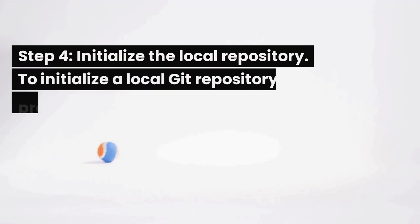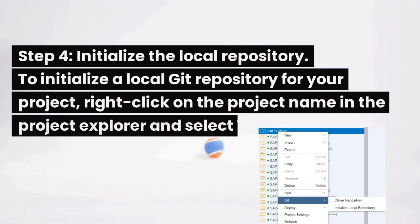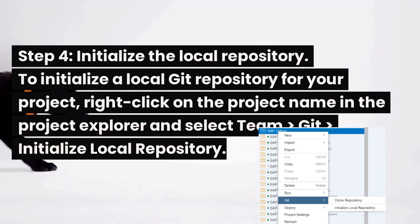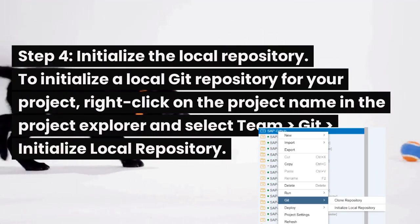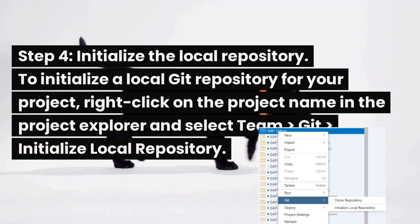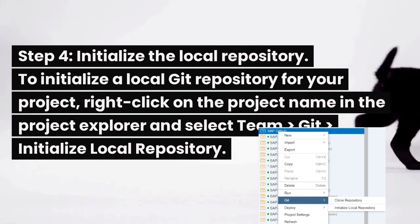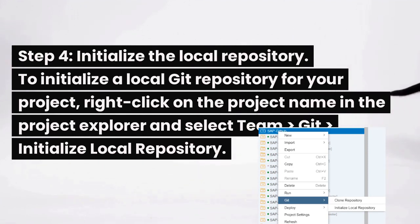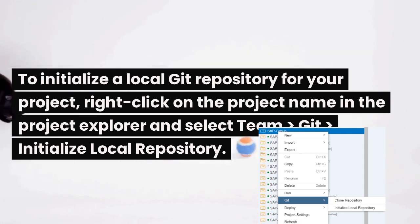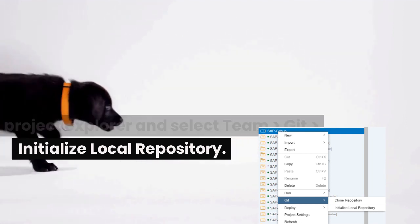Step 4: initialize the local repository. To initialize a local Git repository for your project, right-click on the project name in the project explorer and select Team > Git > Initialize Local Repository.